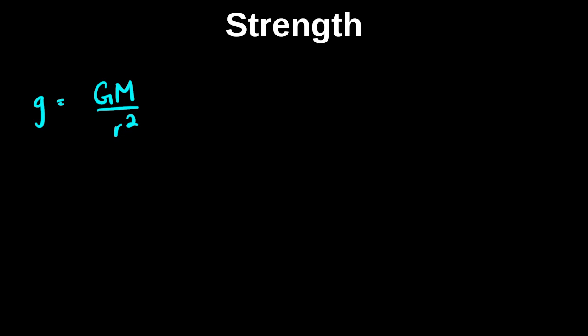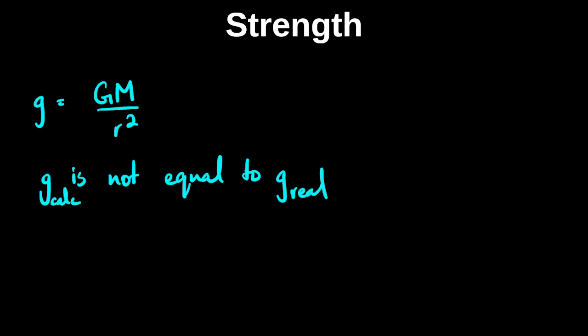Before that, I also want to tell you about a couple of things the examiner has asked in the past and how you can answer those questions. Sometimes the examiner makes you do a calculation and then gives you this hint — an observation that the gravitational field strength you calculated is not equal to the real gravitational field strength.